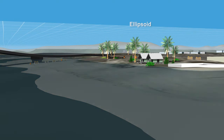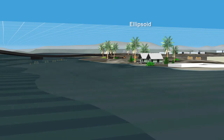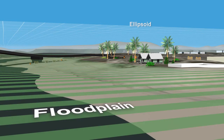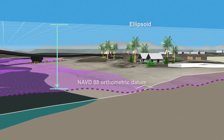Unfortunately, ellipsoidal reference frames do not accurately represent topography or gravity, which are both important in determining the direction water will flow. As a result, for applications like floodplain mapping, we need our data referenced to an orthometric height system, such as the North American Vertical Datum of 1988, NAVD88, which accounts for differences in gravity.